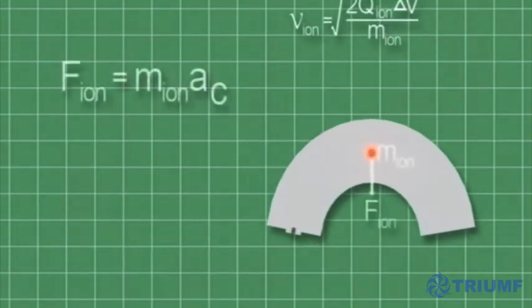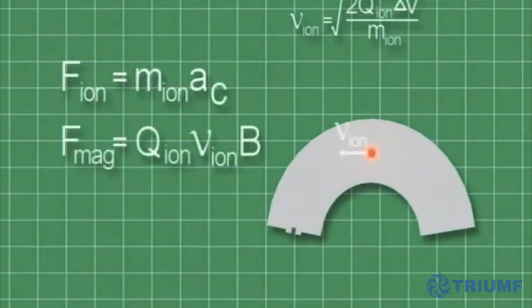Starting with Newton's second law, let's substitute in the magnetic force F and the centripetal acceleration A into the formula.